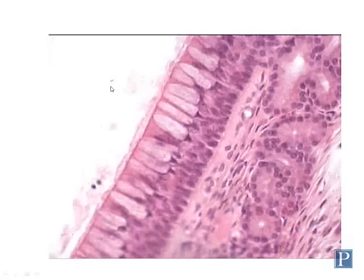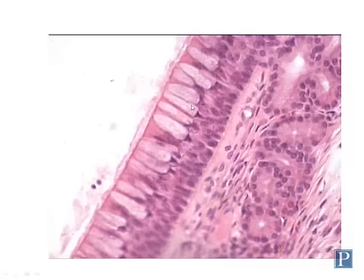Here is another section of PCCE, and you can see this particular section is particularly rich in goblet cells — these are wider, more pale cells that contain mucus. You tend to find lots of goblet cells associated with PCCE because they secrete the mucus that traps dust and other particulate matter that gets swept away by the cilia at the apical surface.